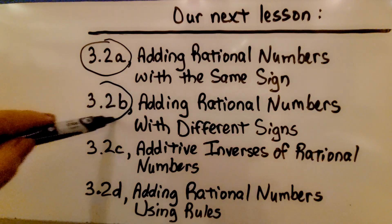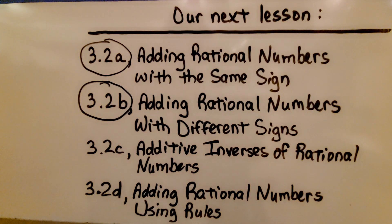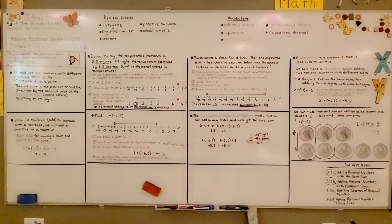We finished part b. We're going to move on to 3.2c, additive inverses of rational numbers. I hope you enjoyed the rest of your day and I hope you join me for the next part of the lesson.